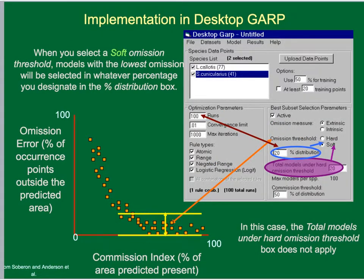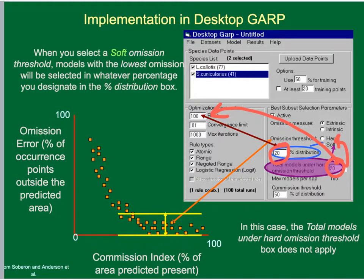If you've selected a soft omission threshold, the models with the lowest omission will be selected in whatever percentage you choose from the distribution. In that case, the total number of models under the hard omission rule does not apply. For example, we had 20 models selected under a hard rule, whereas with a soft threshold we're selecting 20% of the distribution with the lowest overall omission out of the total number of models constructed.